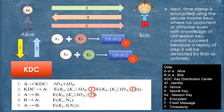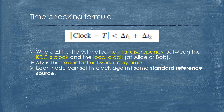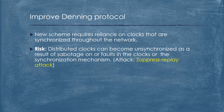The timestamp is encrypted using the secure master keys, so no opponent or attacker, even with knowledge of an old session key, can succeed. A replay of step 3 will be detected by Bob as untimely. Here, t1 is the estimated normal discrepancy between the KDC's clock and the local clock at Alice or Bob, and t2 is the expected network delay time. Each node can set its clock against some standard reference source.